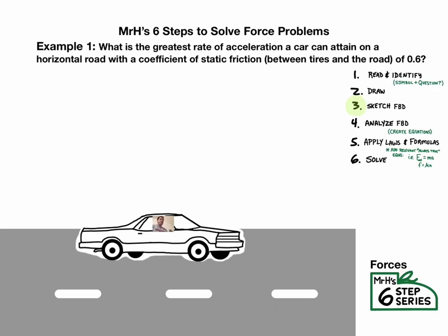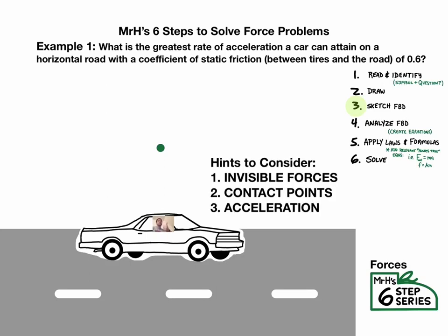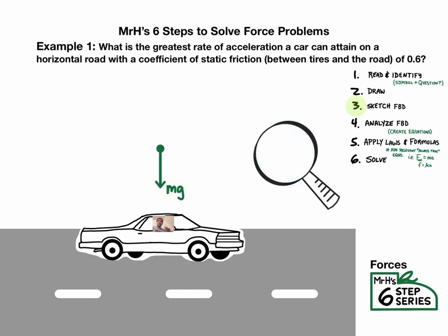Let's start our free body diagram with a dot that represents the body. And then we're going to look for our three hints: invisible forces, contact points, and we're going to consider acceleration. There's going to be invisible gravity down. And then we're going to look for contact points on the car. It looks like the ground has a supportive force up. So we're going to have a normal force. And if there's no acceleration vertically, there shouldn't be a winning direction up or down. So those two forces have to be equal. And then the ground is also providing frictional force to resist the tires sliding. So that frictional force should be forward.